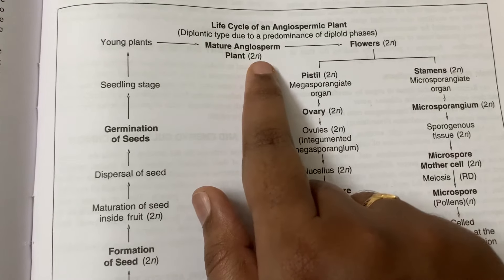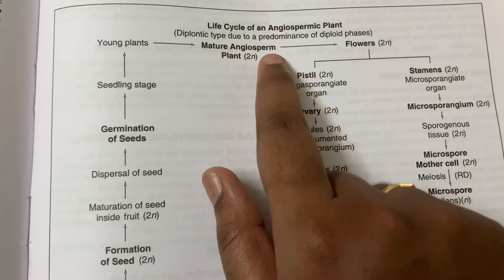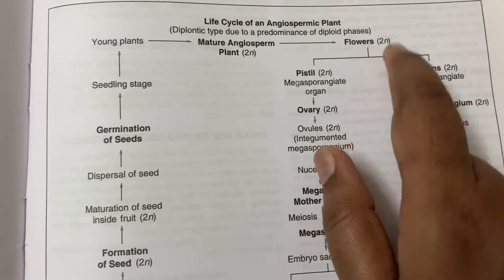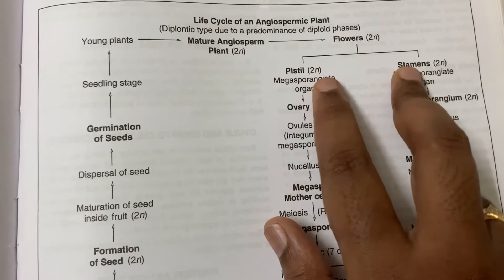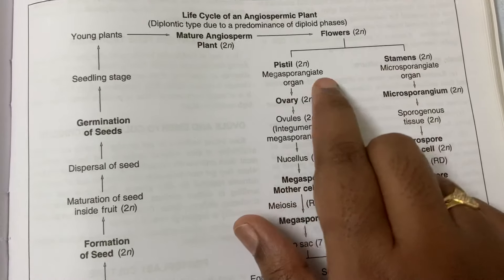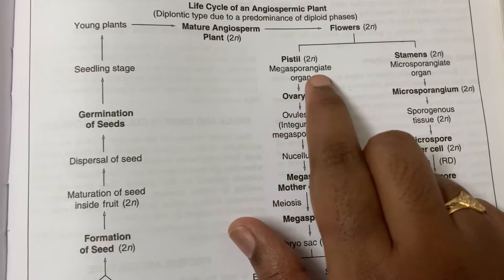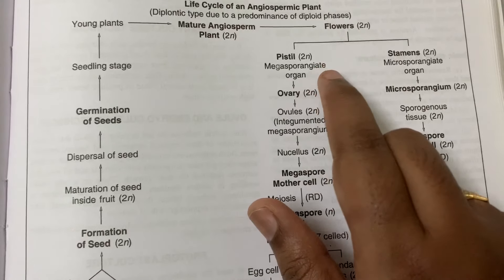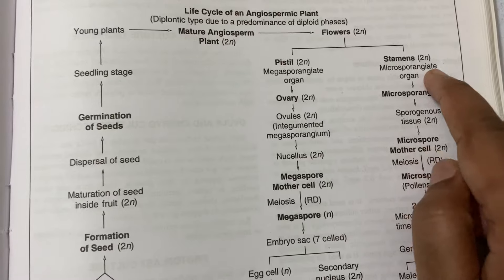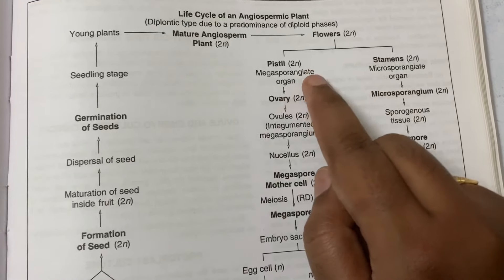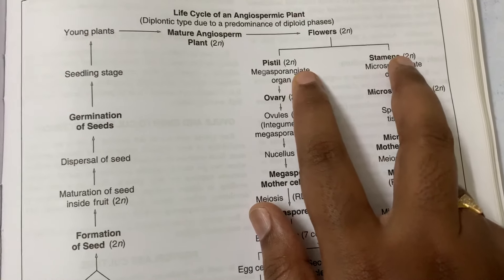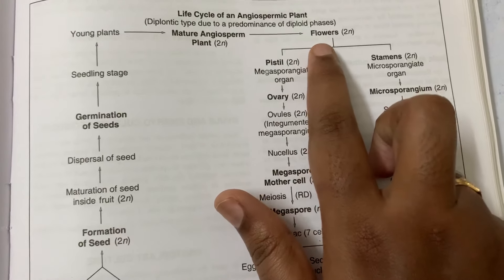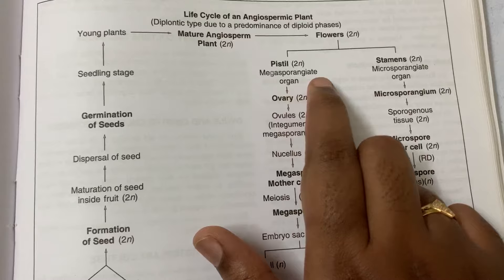This diploid plant gives rise to reproductive structures, which are flowers. Flowers are also diploid. In these flowers we have two important structures: the pistil and the stamen. The pistil we call the megasporangiate organ and the stamen we call the microsporangiate organ. The megasporangiate organ is female and the microsporangiate organ is male. Both stamens and pistils are also diploid in nature, as they are very important structures for fertilization.